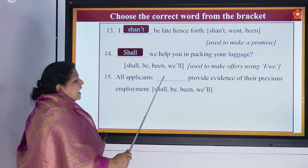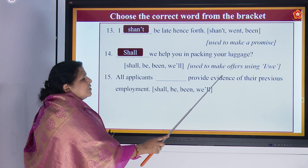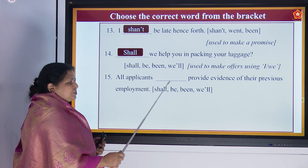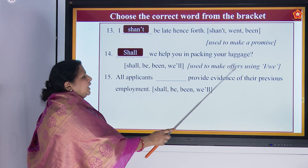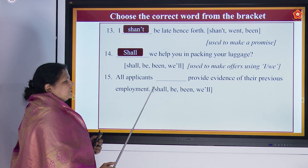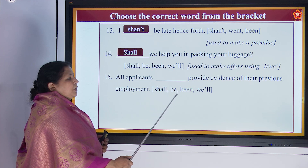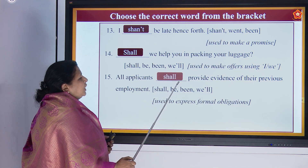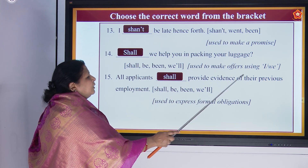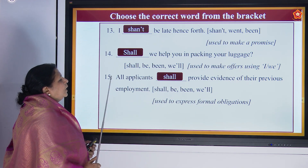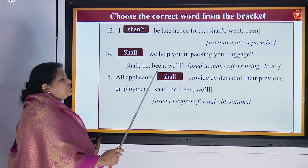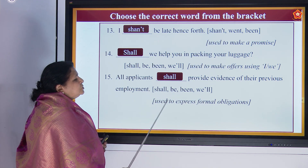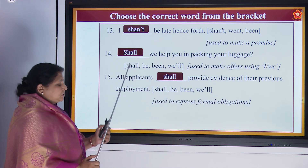'All applicants dash provide evidence for their previous employment' — shall, be, or will? Answer: 'All applicants shall provide evidence of their previous employment.' Used to express formal obligations.